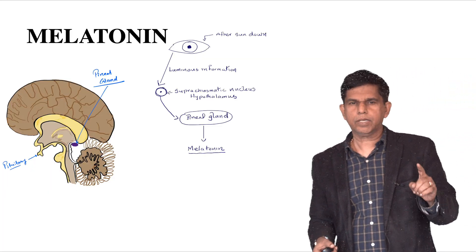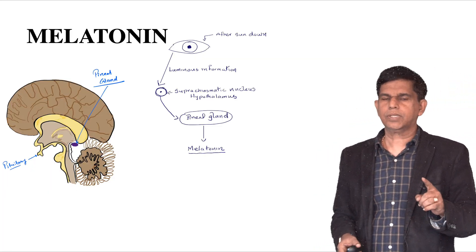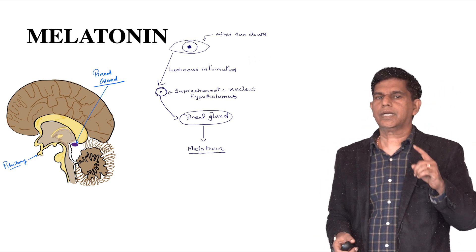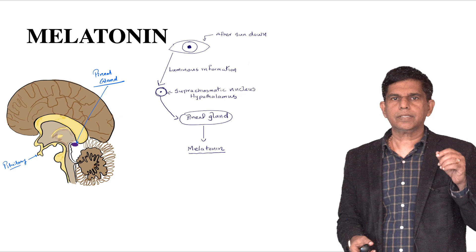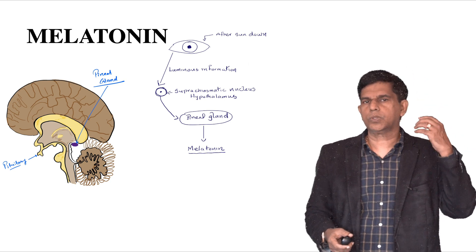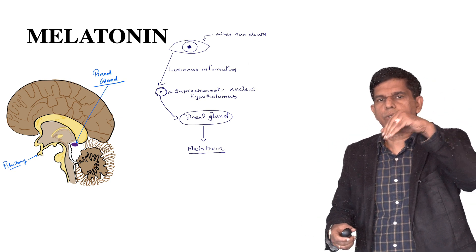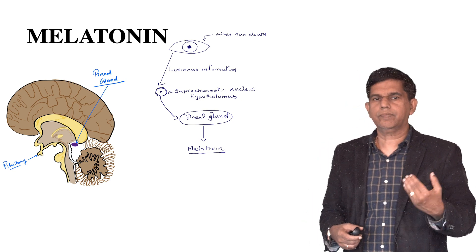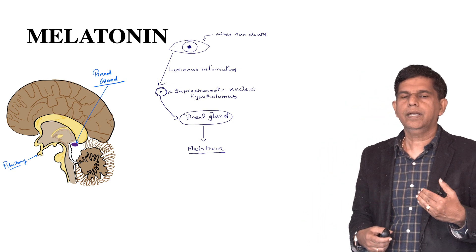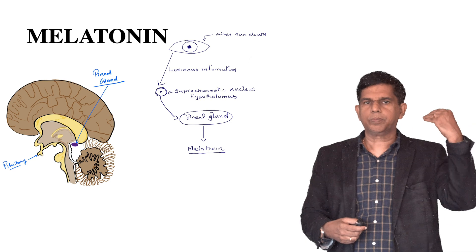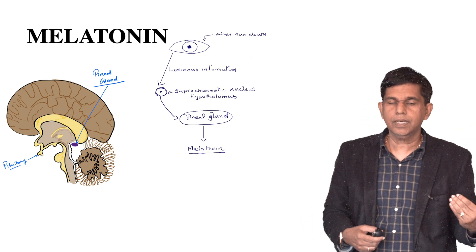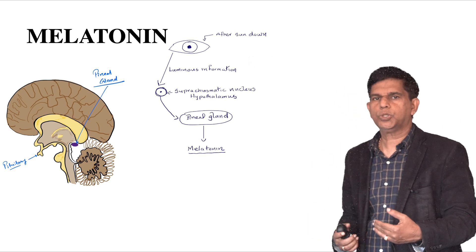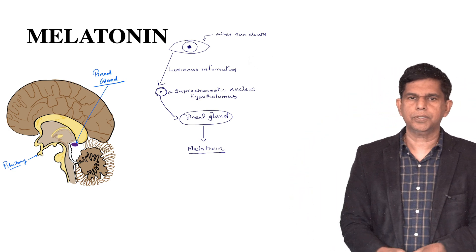Let's start with melatonin — what is it? Production begins in the retina, where luminous information travels to the suprachiasmatic nucleus in the hypothalamus. The signal then goes to the pineal gland. Anytime it gets dark, the signal travels from the retina to the suprachiasmatic nucleus in the hypothalamus, then to the pineal gland, telling it to secrete melatonin into the blood.